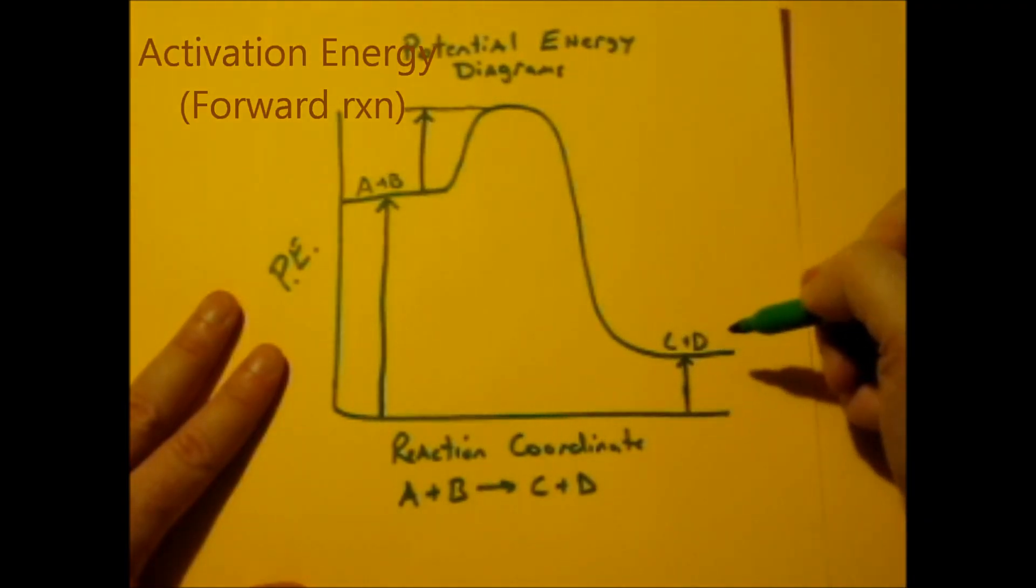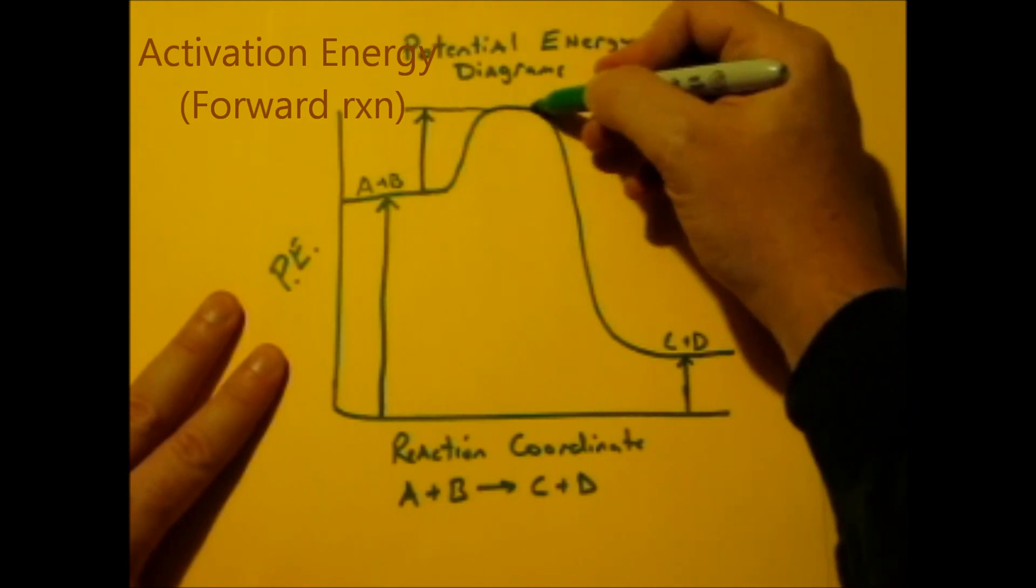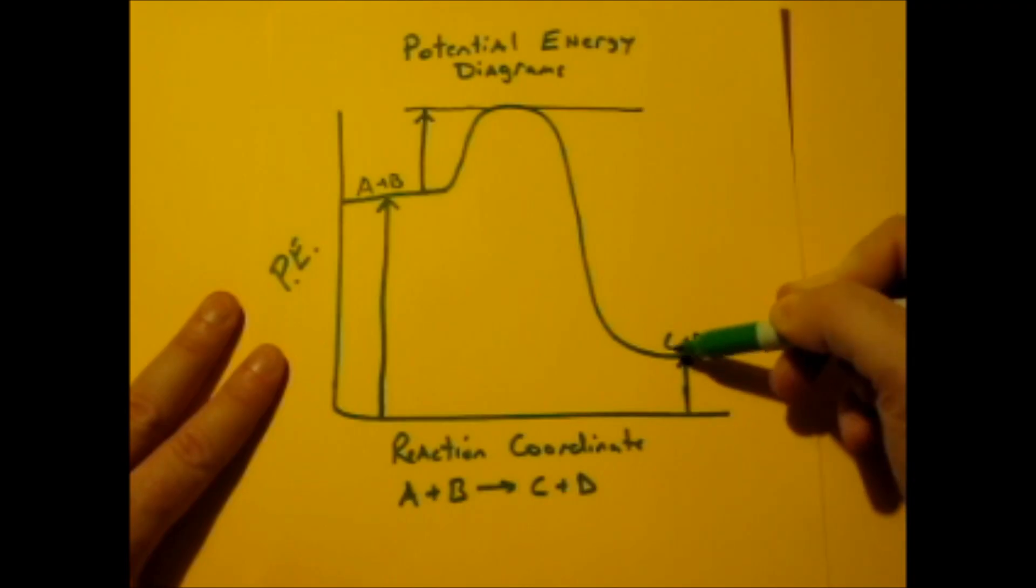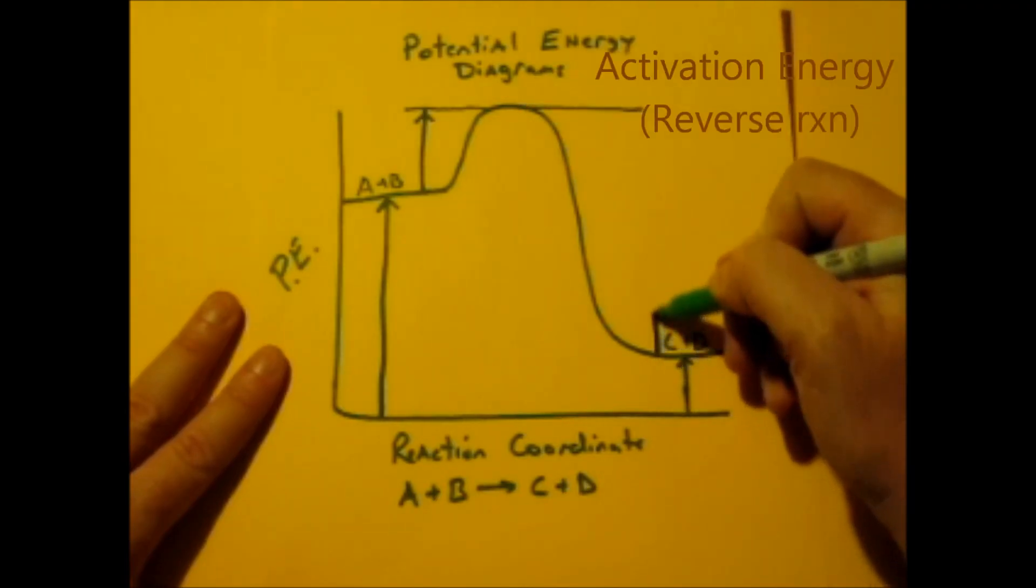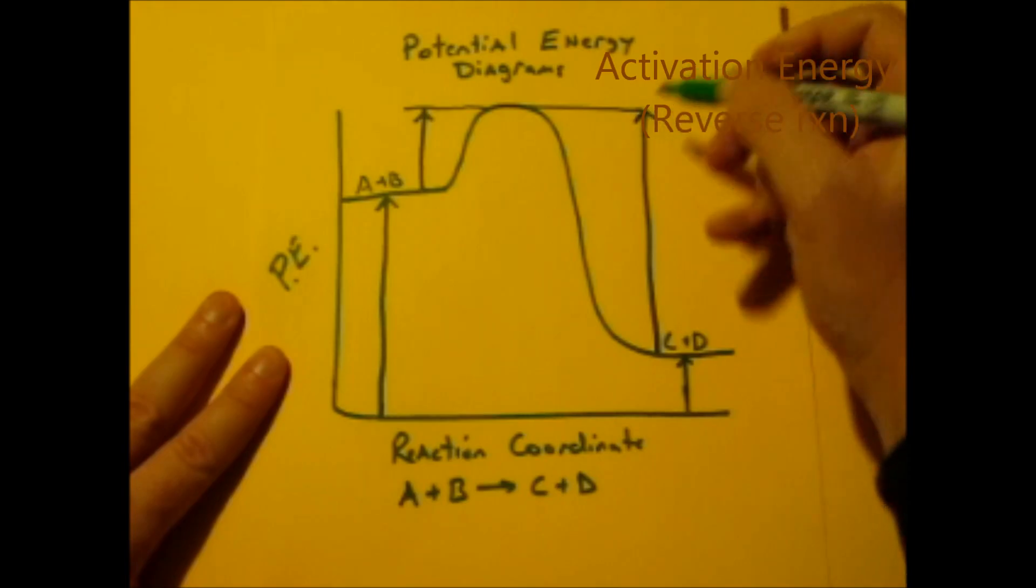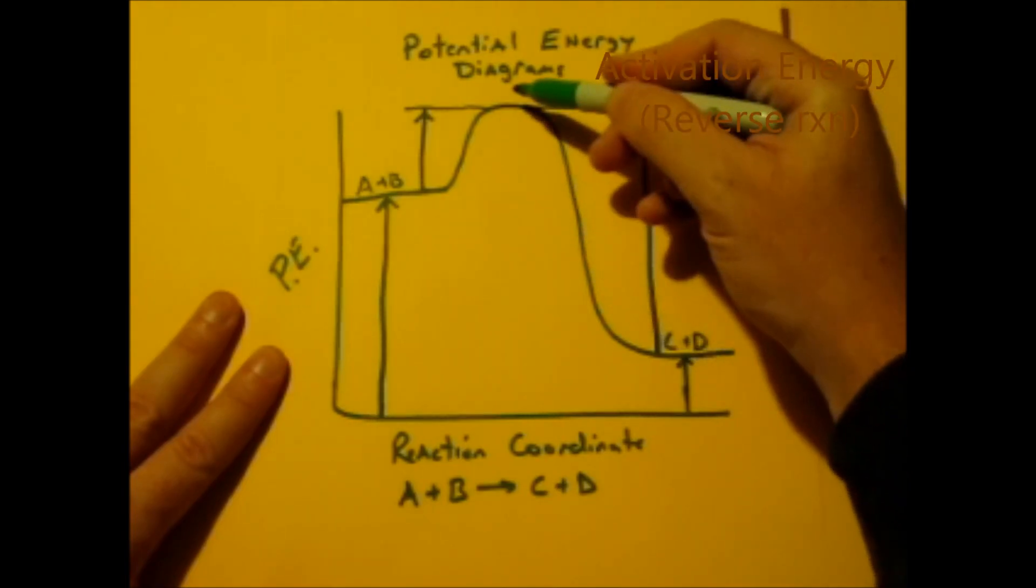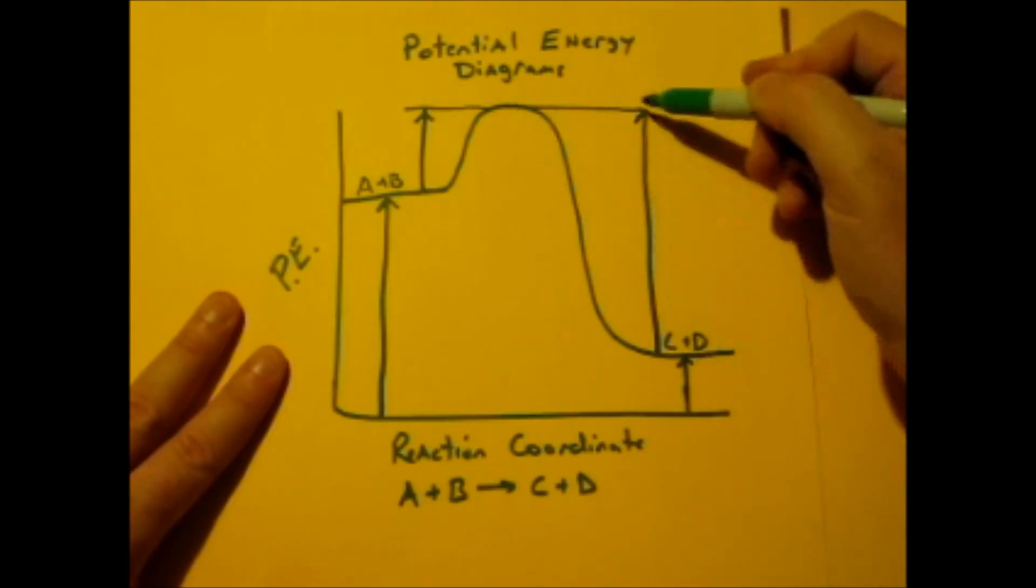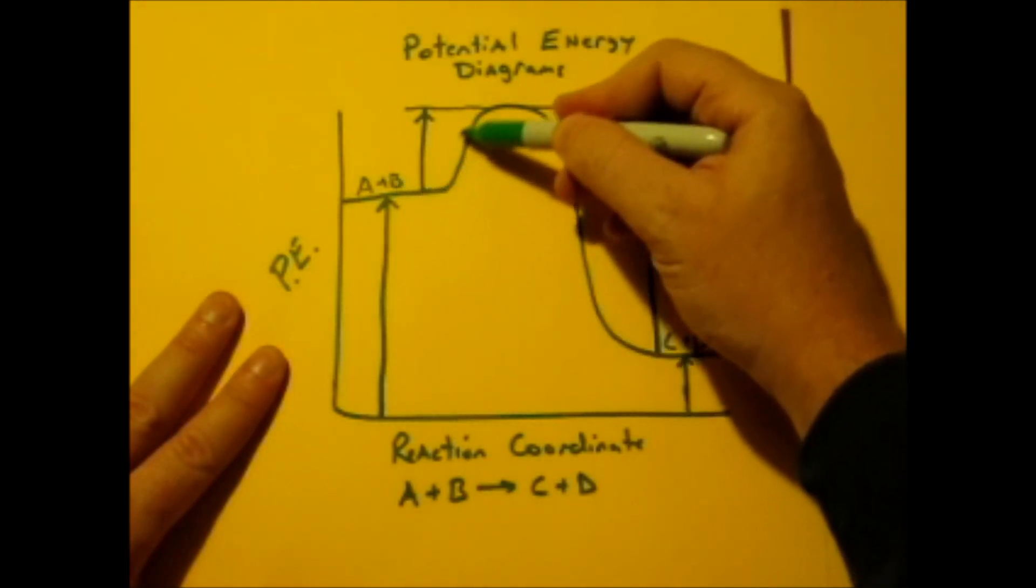There's also something called reverse activation energy. That's if we're going to run this reaction backwards. It's the energy to go from where the products are to the top of this hill. It's kind of like riding a roller coaster in reverse. In order to start the roller coaster, you have to get to the top of the hill. Going reverse, it has to go that way. Going forward, it only has to go this way.